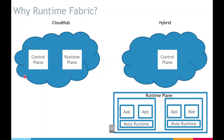So why do we need runtime fabric? You might be aware of these two deployment models. In CloudHub, the control plane and the runtime plane both are in MuleSoft's managed cloud. As an organization, I would not like to host my business data on MuleSoft's managed cloud — I would rather want to have complete ownership of my business data, which means it should not leave my systems. For such requirements, CloudHub doesn't work. Also, CloudHub allows one Mule application per worker, which is good, but spinning up a new worker — which basically is a virtual machine — and then deploying an application can sometimes become time consuming. So these are the two drawbacks or limitations of CloudHub.